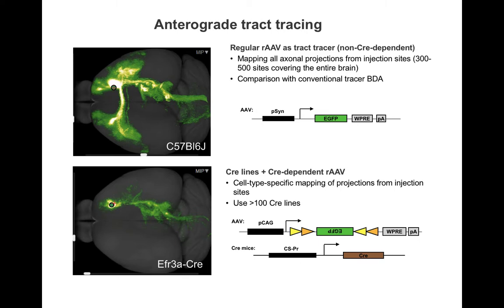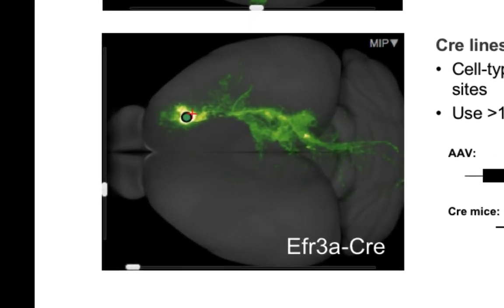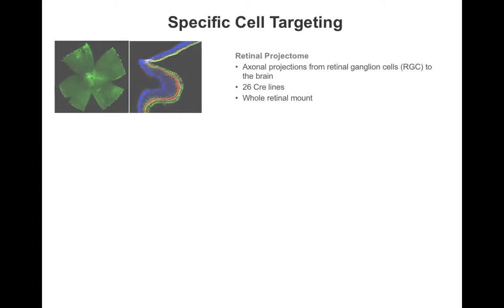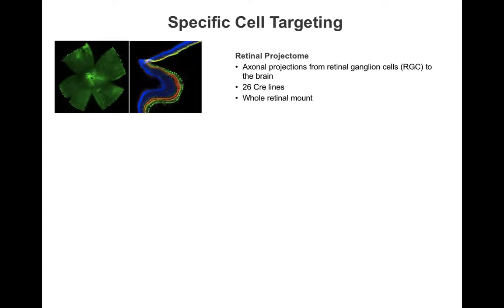This image shows an example of the EFR3A Cre line. Within this atlas is a small project that mapped projections from the retinal ganglion cells using AAV injected into the eye in 26 different Cre lines. This data set includes projection tracings, whole mount, and retinal cross-sections stained via immunohistochemistry.